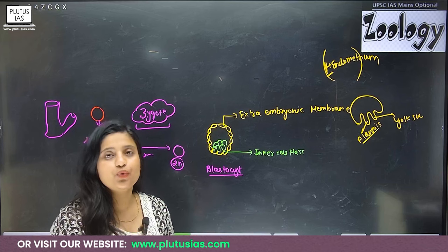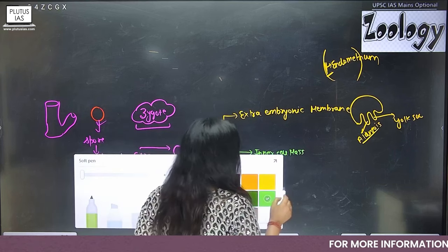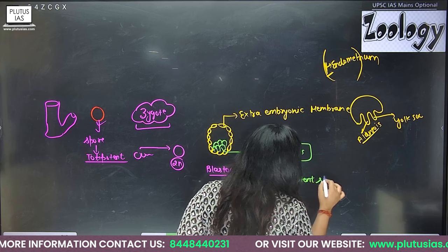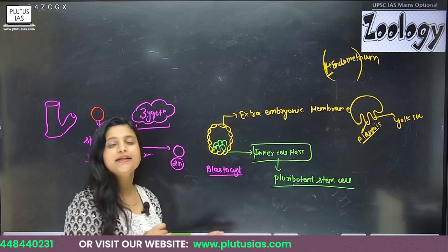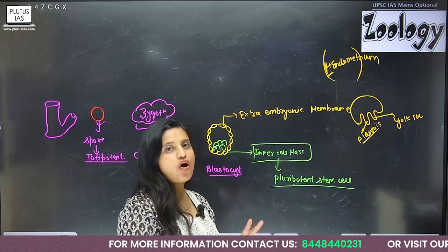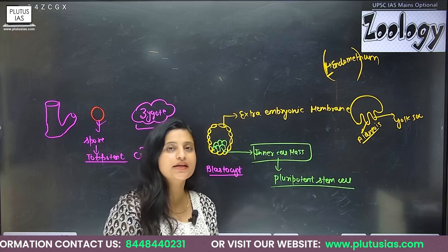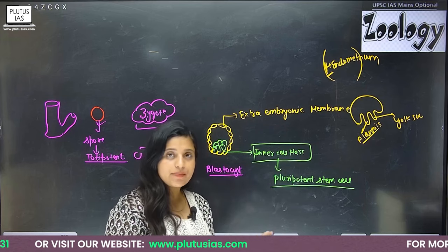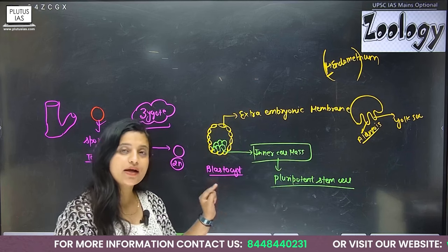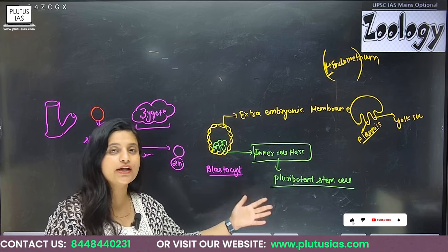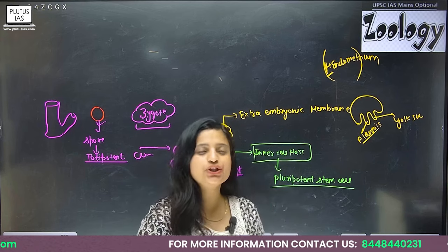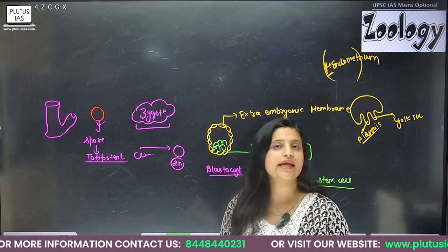The inner cell mass contains pluripotent stem cells. What is the difference between totipotent and pluripotent? Totipotent can develop into a complete new organism and forms both the extra-embryonic membrane and the inner cell mass. Pluripotent stem cells, on the other hand, have the potency to form an embryo but cannot form the extra-embryonic membrane. Pluripotent cells can differentiate into any type of body cell and give rise to any type of organ — lung cells, skin cells, intestine cells, heart cells.